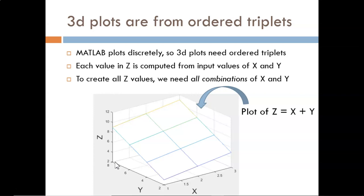Then, and this is the key part, Z is computed as X plus Y at every combination of X and Y. Those computed ordered triplets are the intersection points of these gridlines. For example, the lower right corner shows X is 3, Y is 2, and Z is 5.